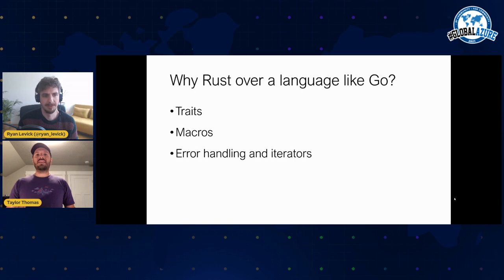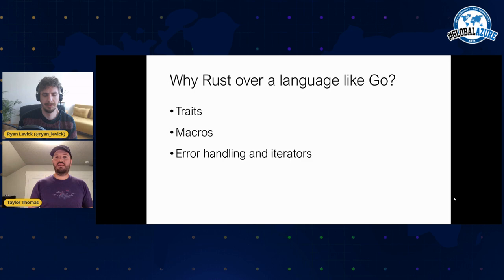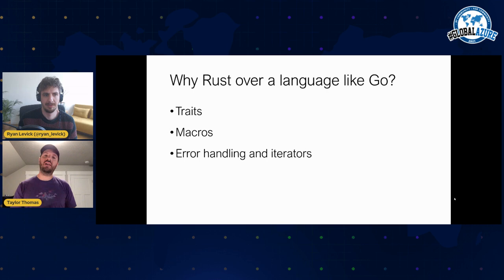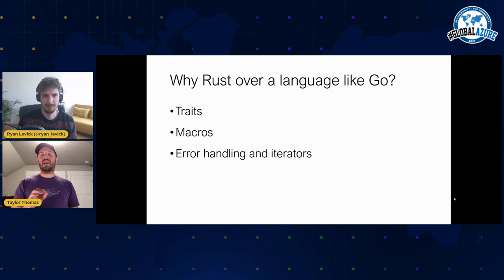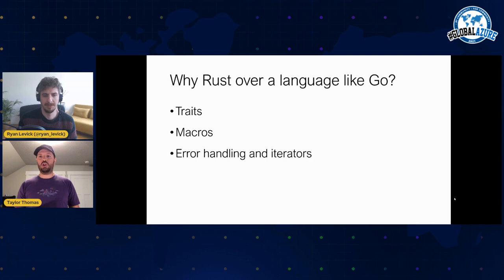Macros make code so nice to write, particularly in a cloud environment where you're interacting with so many APIs. The combination of traits that you can reuse with ease, plus macros that allow you to generate code without the boilerplate that happens with Go and Kubernetes, is really powerful. The next thing we really love is the error handling and iteration tools. A lot of the functional programming world is available in Rust. Error handling in Rust means errors are values that have to be handled or they raise a compiler warning. You can filter, map, and collect, and do things like fan-out/fan-in jobs in very short amounts of code — we're talking 10 or 15 lines.